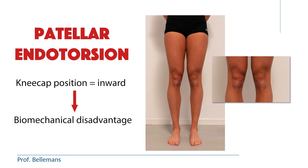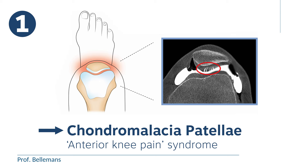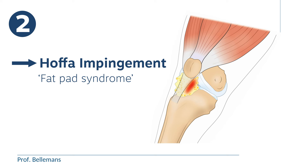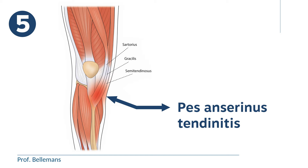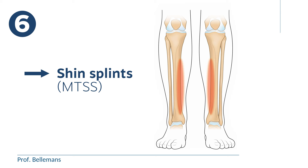This overload contributes to several painful conditions such as chondromalacia patelli or anterior knee pain syndrome, Hoffa impingement or also called fat-pad syndrome, patellar tendonitis, plica syndrome, pes anserina's tendonitis, and shin splints or medial tibial stress syndrome, and so on.